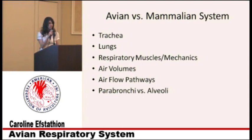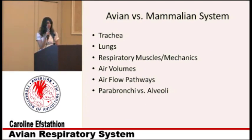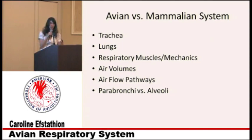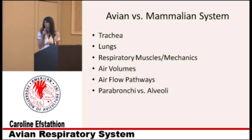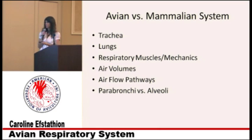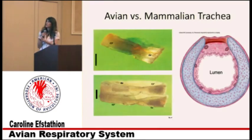Those are the main components of the respiratory system. Now we're going to get into the differences between birds and mammals, focusing on the trachea, the lungs, respiratory mechanics and muscles involved, air volumes, pathways, and then the gas exchange areas.